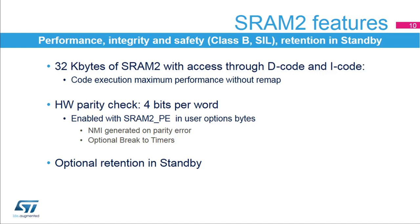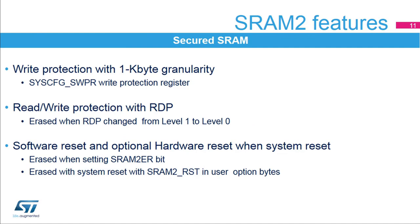The SRAM2 content can optionally be retained in standby. The SRAM2 is also suitable for secure applications. It can be write protected with a 1KB granularity, and can also be readout protected via the RDP option byte. When protected, the SRAM2 cannot be read or written by the JTAG or serial wire debug port, and when boot in system flash or boot in SRAM is selected. The SRAM2 is erased when the readout protection is changed from level 1 to level 0. The SRAM2 can be erased by software by setting the SRAM2_ER bit in the SRAM2 system configuration control and status register, or erased with a system reset depending on the option bit SRAM2_RST in the user option bytes.